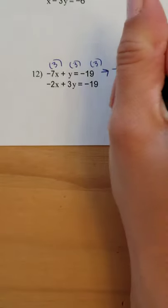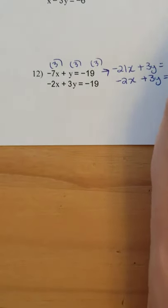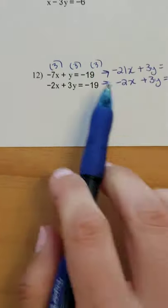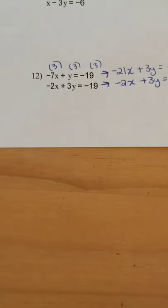So this equation becomes negative 21x plus 3y equals 19 times 3 is negative 57. And then this one below didn't change, right? So I recopy it. So now they're still nicely stacked. And now I have the same number out front with the y's.